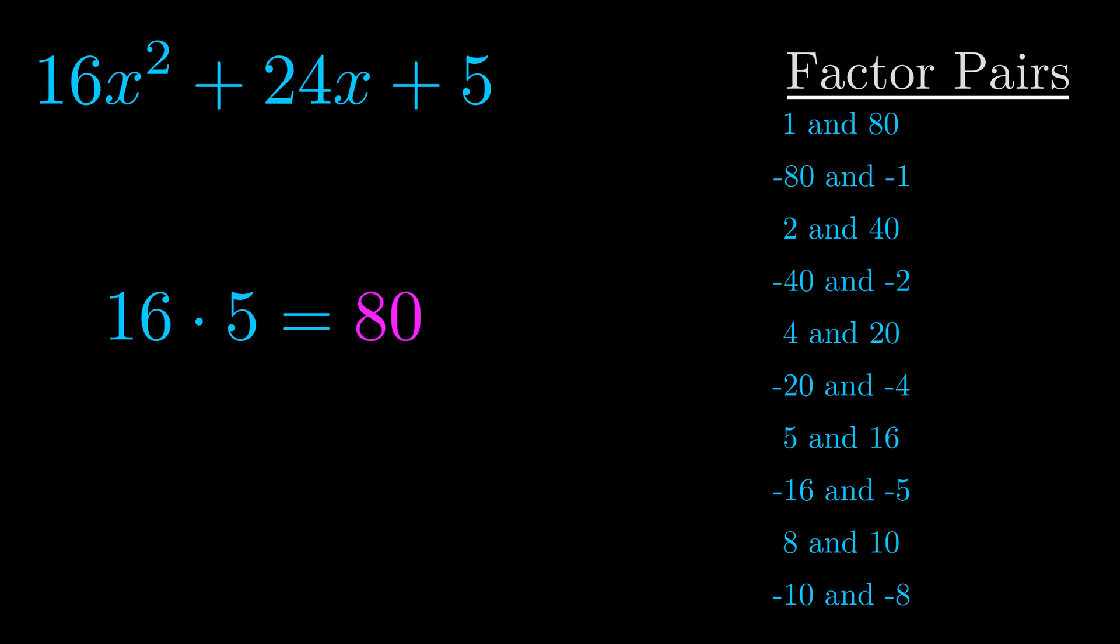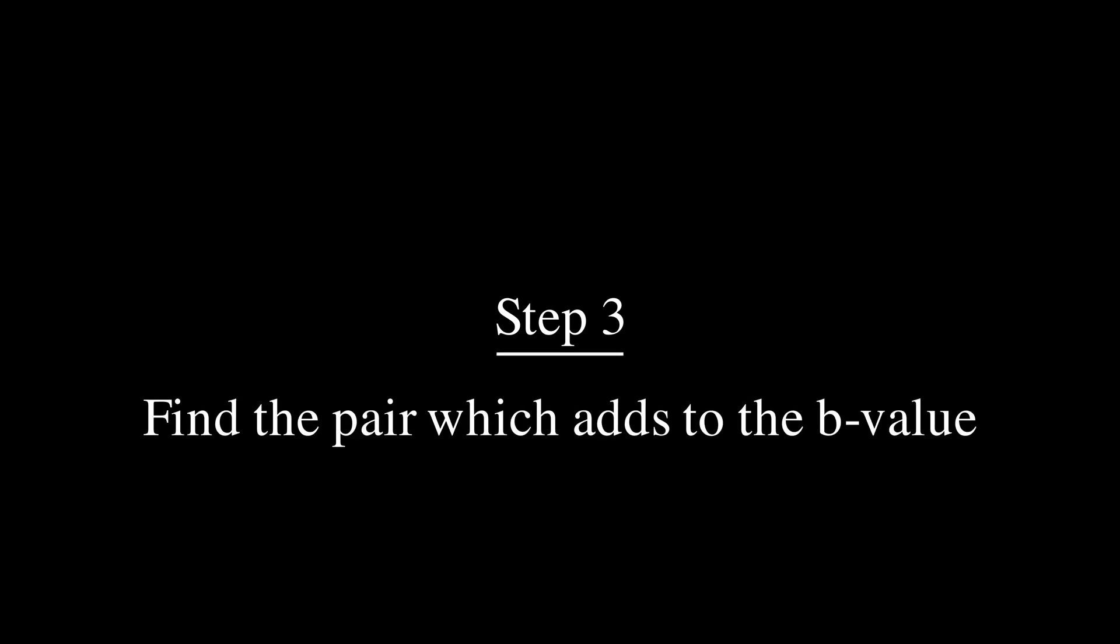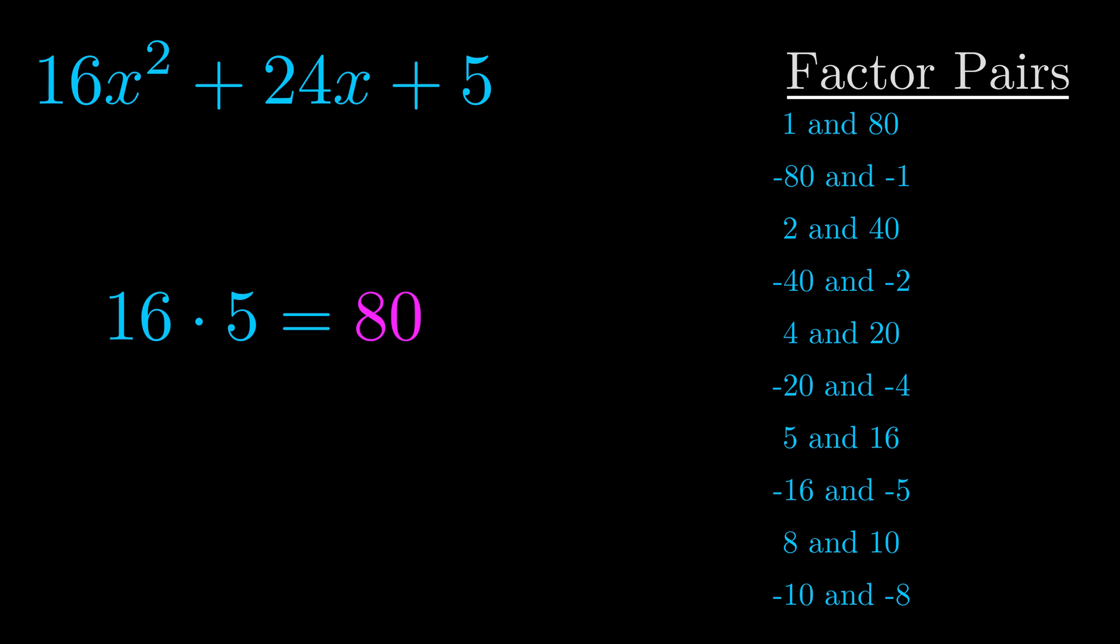Now once you have these factor pairs, the goal is to find which of these pairs adds to the b value. The b value is the coefficient on the x term. That's the middle term, the one that we haven't done anything with yet.